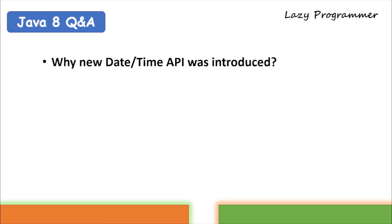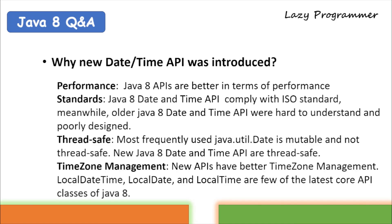A big addition in Java 8 was the new date and time API. Why was it introduced when Calendar and java.util.Date already existed? It was introduced to overcome issues with the previous API. Java 8 date and time APIs are better in terms of performance, comply with ISO standards, and are thread-safe — the older API is mutable and not thread-safe. There is also better time zone management in the new API, with classes like LocalDateTime, LocalDate, and LocalTime.